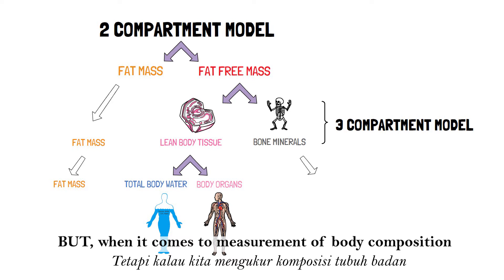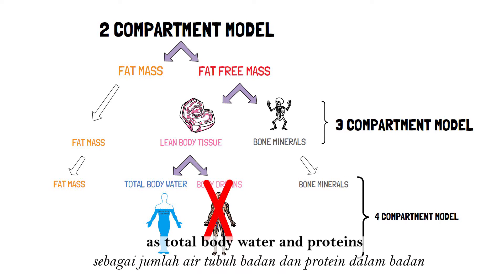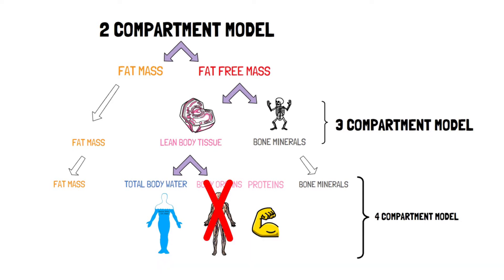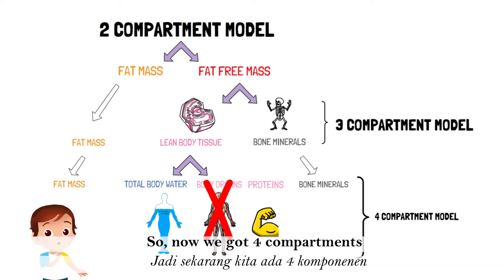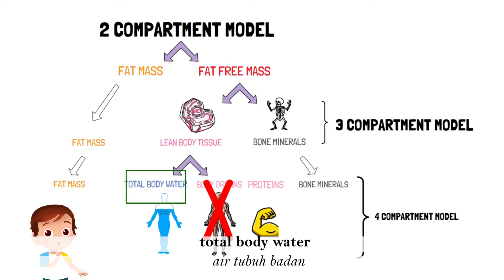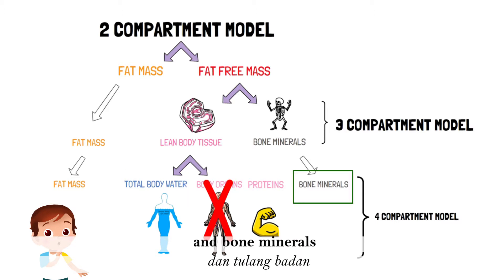When it comes to measurement of body composition in fitness and health settings, we just divide the lean body tissue mass as total body water and proteins. The proteins are mainly made up from our muscle mass. So now we have four compartments: fat mass, total body water, protein, and bone minerals.